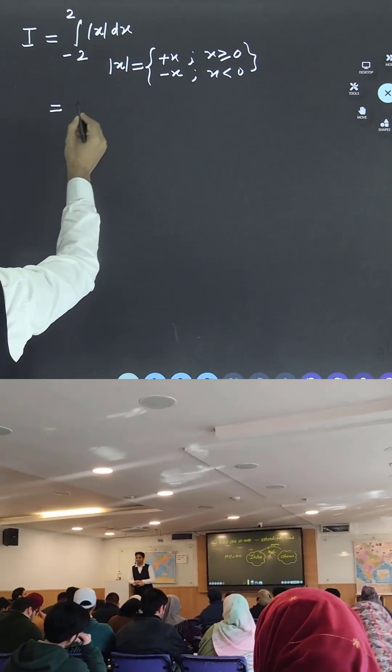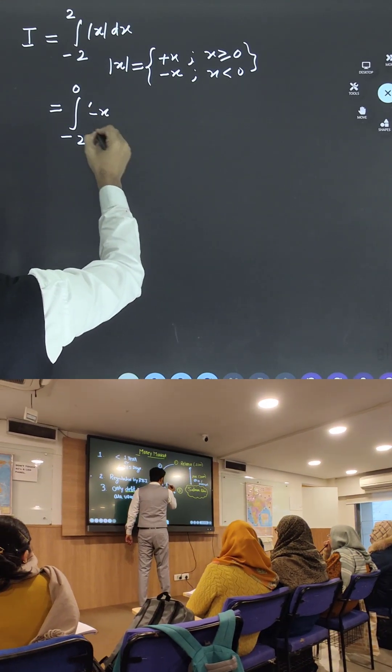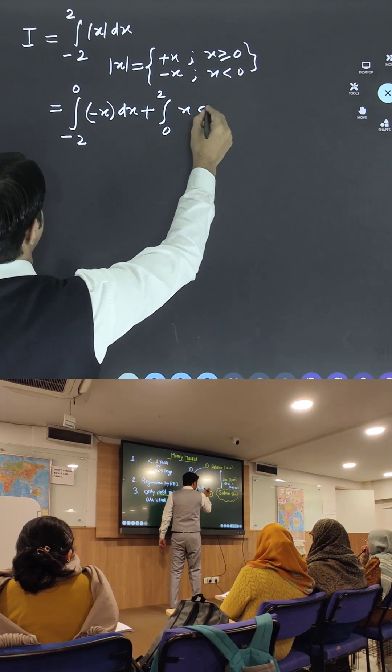Now can I write this as integration from minus 2 to 0, it will be treated as minus x dx, plus from 0 to 2, this is x dx.